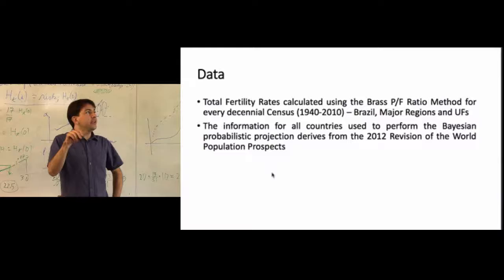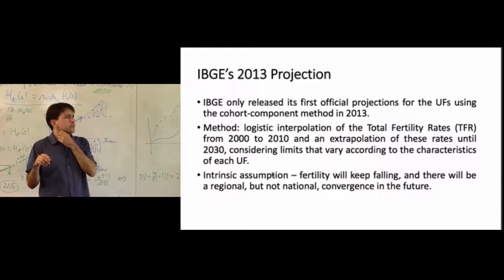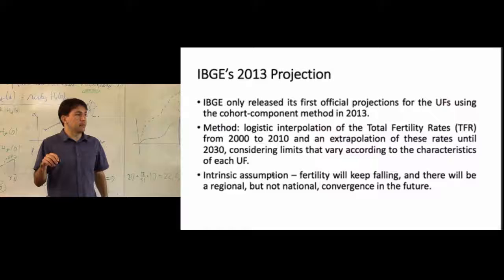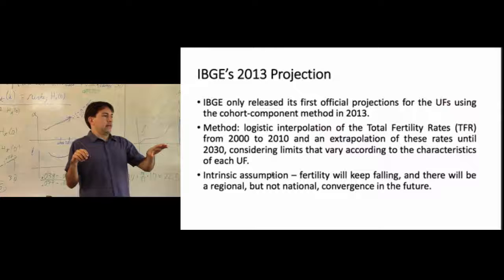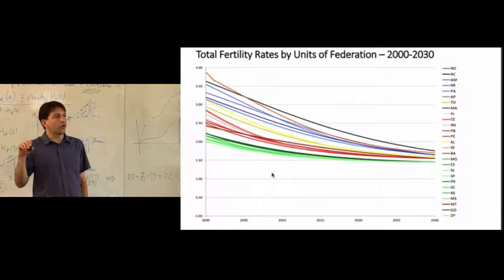Here are the main assumptions and results of the IBGE projection. Fertility was estimated for 2000 and 2010, and then a limit was set for 2030 which varies for each unit of federation. The assumption is that fertility will keep falling, but there will be some differences in the future — basically some regional convergences, though differences will remain.